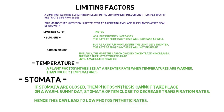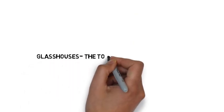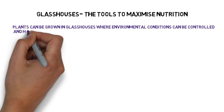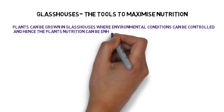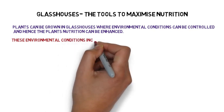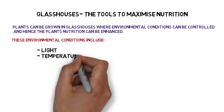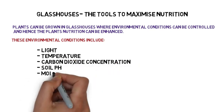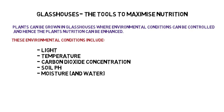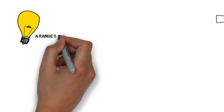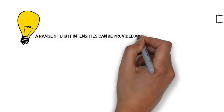Glasshouses — the tools to maximise nutrition. Plants can be grown in glasshouses where environmental conditions can be controlled and hence the plant's nutrition can be enhanced. These environmental conditions include light, temperature, carbon dioxide concentration, soil pH level, and moisture or water levels. A range of light intensities can be provided at the correct wavelengths to the plant even in cloudy and dark conditions.